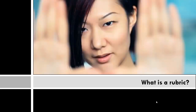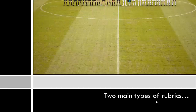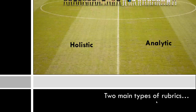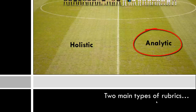In the previous video, we explored two types of rubrics defined by their purpose. The previous video identified holistic and analytic rubrics as two different types of rubrics. However, this video will specifically focus on considerations for creating an analytic rubric. You can then take these considerations and apply them to creating a holistic rubric.